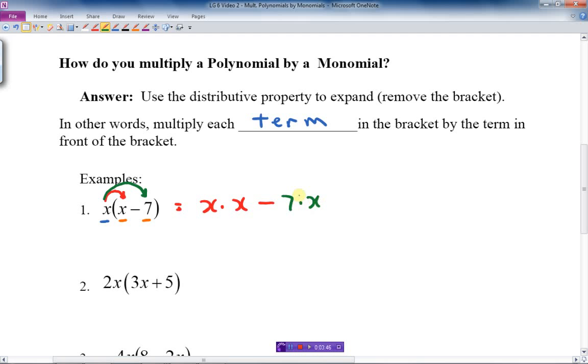What does this equal? x times x is x squared, because both of these are 1x and 1x. For the next one, we multiply 7 times x, which is just 7x, or minus 7x. There's our answer. Multiply each term by the term in front.